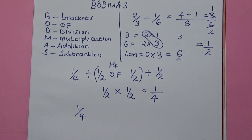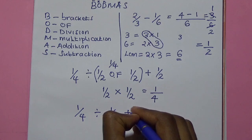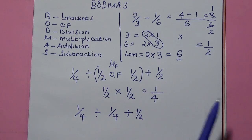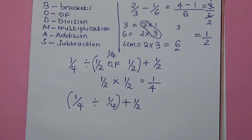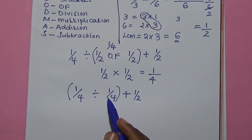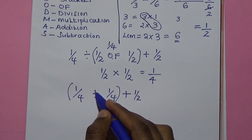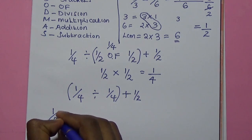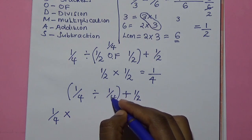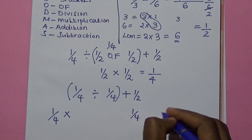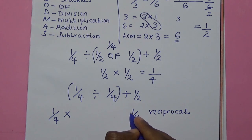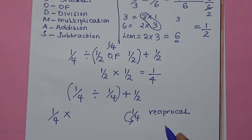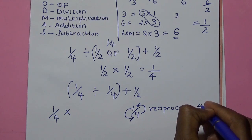We write down what we have: 1 over 4 divided by 1 over 4 plus a half. We are done with of, so we go to division. We have 1 over 4 divided by 1 over 4. When you are dividing fractions, you change the division sign into multiplication and find the reciprocal. When finding the reciprocal, the numerator becomes the denominator and the denominator becomes the numerator. Therefore, the reciprocal of 1 over 4 is 4 over 1.